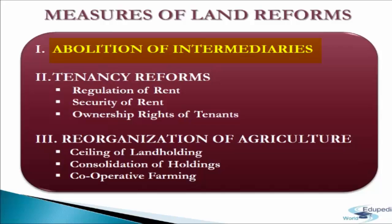The Britishers had created a large army of intermediaries in the form of zamindars, mahalwars and jyotwars. They collected rent from the cultivators and deposited a portion of it to the government as land revenue. The cultivators were subjected to ruthless exploitation. Consequently, after independence, the land reform measures in the form of abolition of intermediaries was a primary concern of the government.